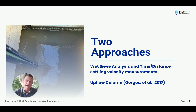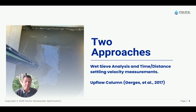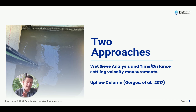The second is a newer method, first documented in a paper in 2017 by Dr. Gerges. This is an upflow column methodology. There we run a known velocity — 1, 2, 3, 4, 5, and 6 feet per minute. We introduce the sample in and then measure the fraction of the sample that settles through that upflow column. That gives us the fraction that has a velocity that exceeds each of those known velocities.